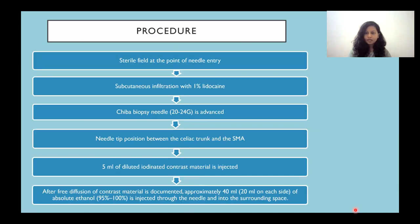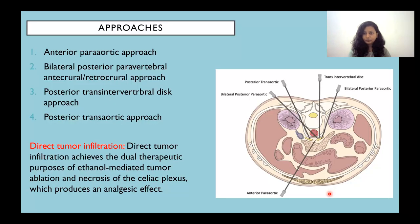Procedure: a sterile field is created at the point of needle entry. Subcutaneous infiltration with 1% lignocaine is carried out, following which a chiba biopsy needle is advanced and the needle tip is positioned between the celiac trunk and SMA. Five ml of diluted iodinated contrast material is injected, and free diffusion of contrast material is documented. Approximately 40 ml — 20 ml on each side — of absolute ethanol is injected through the needle. Various approaches include the anterior paraaortic approach, the bilateral posterior paravertebral anticrural or retrocrural approach, posterior trans-intervertebral disc approach, and posterior trans-aortic approach.